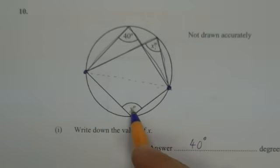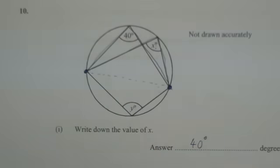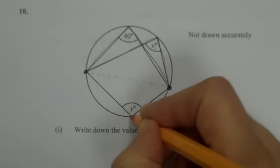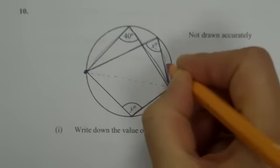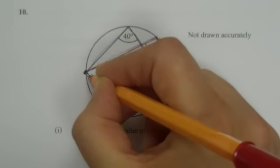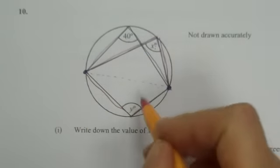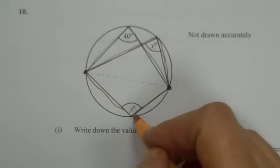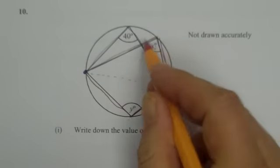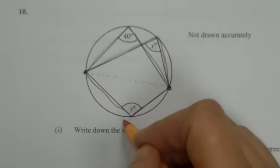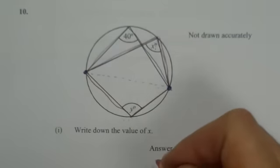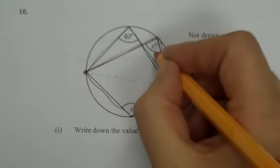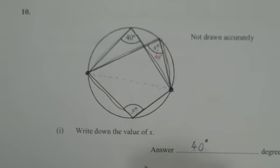Now I'm going to take a look at y. And y is part of this quadrilateral here. Now this quadrilateral, all four corners touch the circumference of the circle, and therefore it's a cyclic quadrilateral. Now we just found that x was 40 degrees, so I'll write that there.